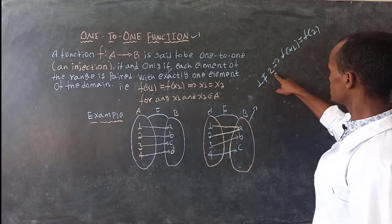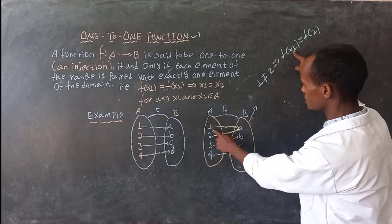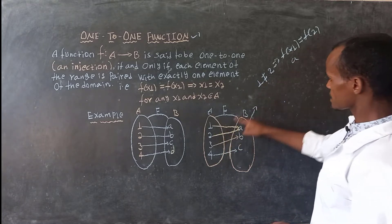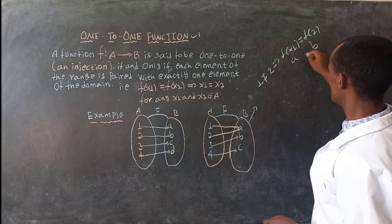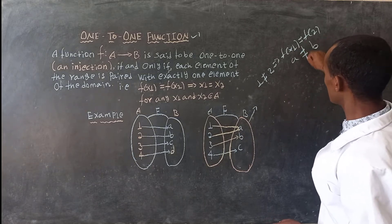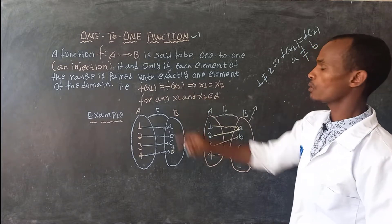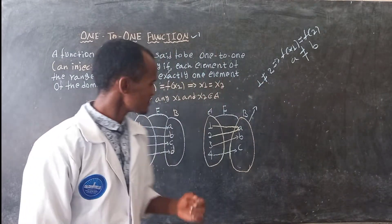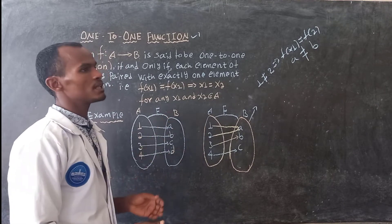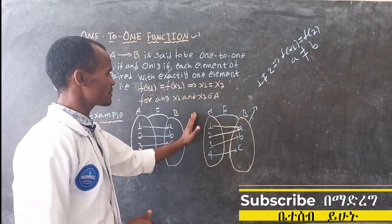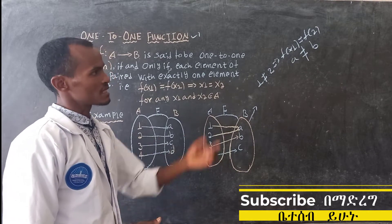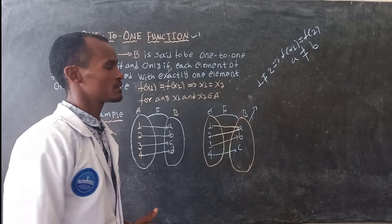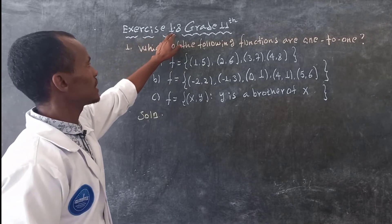If f of x1 is equal to f of x2, then x1 will be equal to x2.